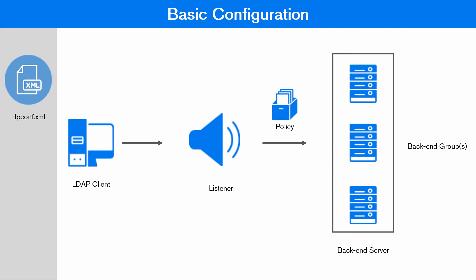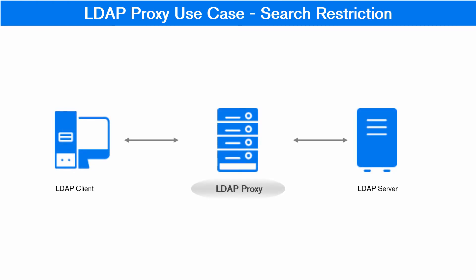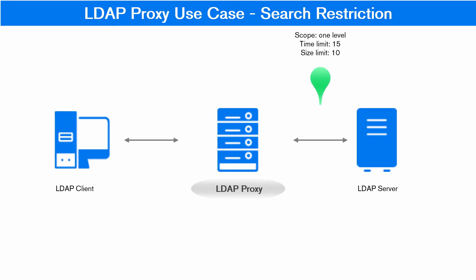The proxy server also has a connection route policy defined by default. Here is an example of search restriction using LDAP Proxy. The LDAP client sends the search operation request to the proxy server. The proxy server then optimizes the search request using the policy engine to get the optimal result and forwards it to the back-end server.